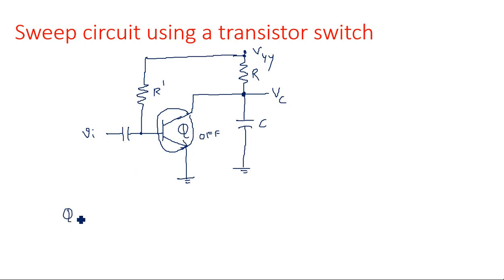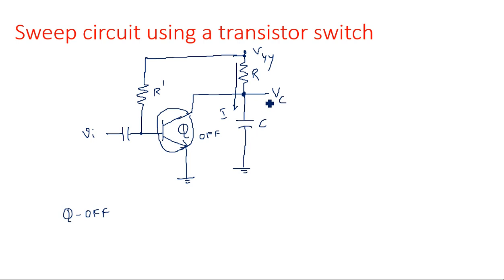If the transistor Q is in off state, what happens? The current will flow from VYY through resistor R towards the capacitor. As the current flows from the main supply VYY towards capacitor C, the capacitor has a charging path. So capacitor C charges.